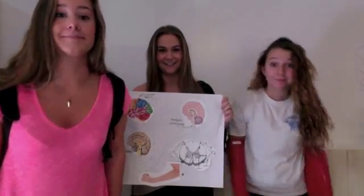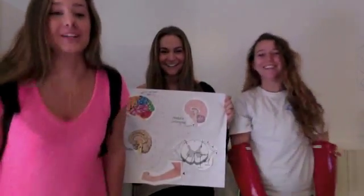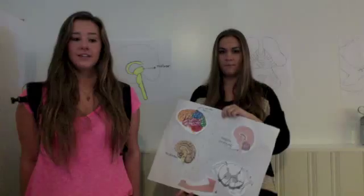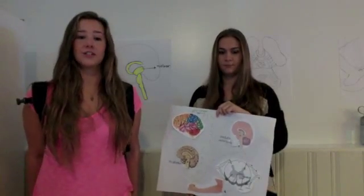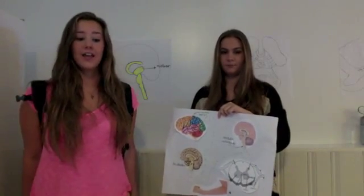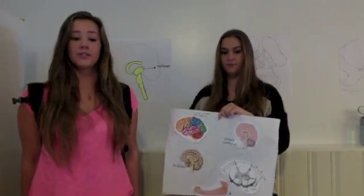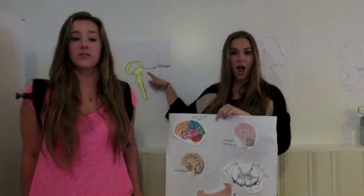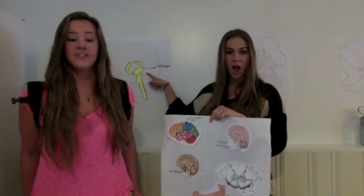This is where cell bodies reside. On the way, axons descend through the internal capsule. Now, we will continue through the cerebral peduncles in the midbrain.